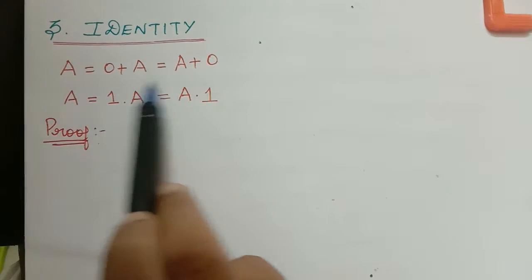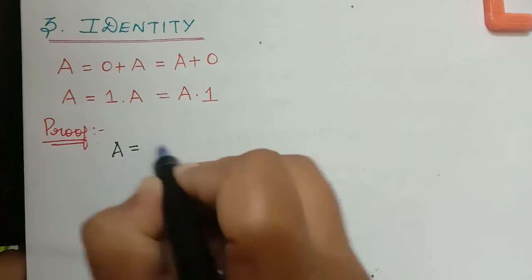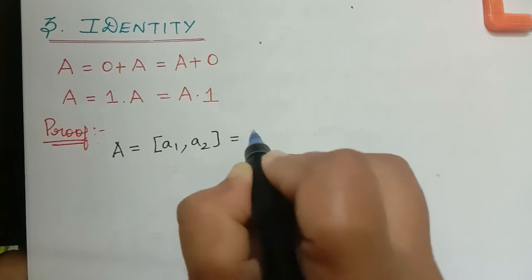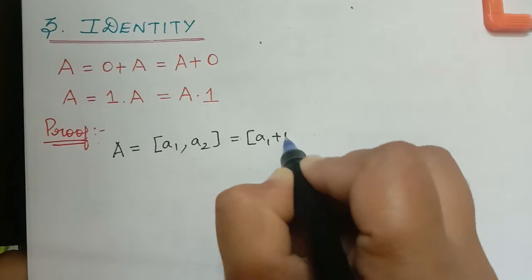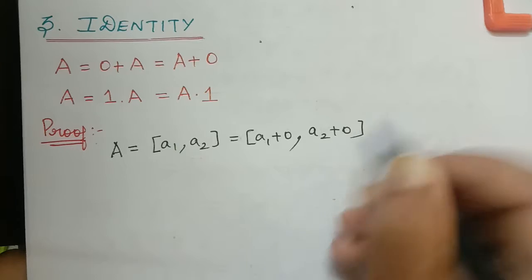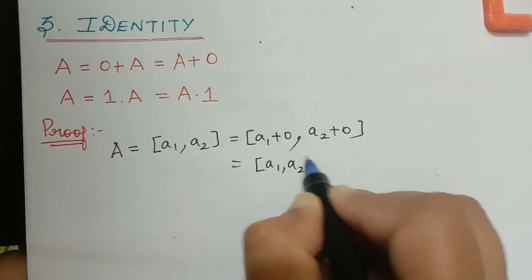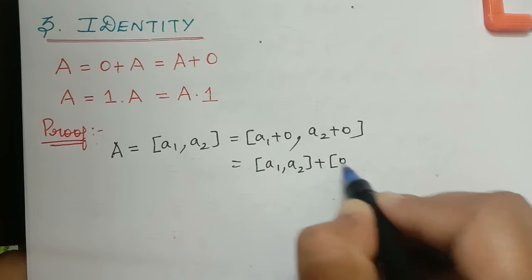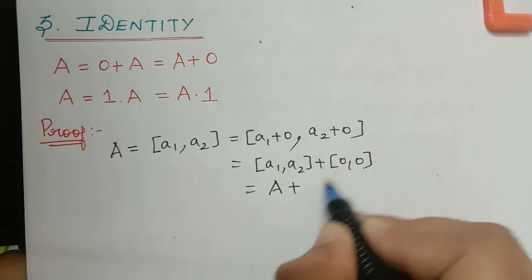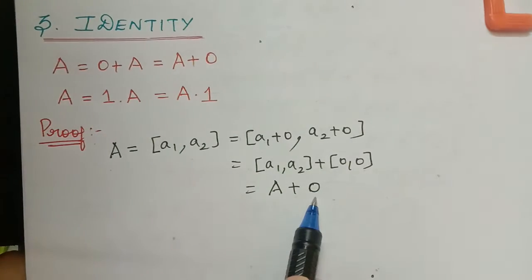Now let us prove this. First let us consider a. What is a? a is equal to [a1, a2]. Now, this can be written as [a1 + 0, a2 + 0]. This can be separated as [a1, a2] + [0, 0]. And this is a plus 0. So a is equal to a plus 0.